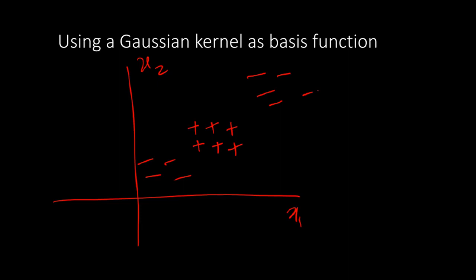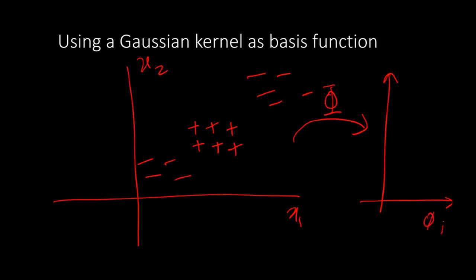If I transform this feature space into another space using a transform phi, I get two new axes, phi1 and phi2. Phi is a function of x that transforms x into new variables phi1 and phi2. The objective is to transform the data into a new space where it is linearly separable.